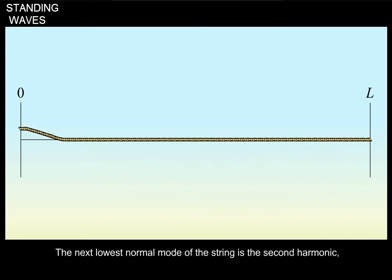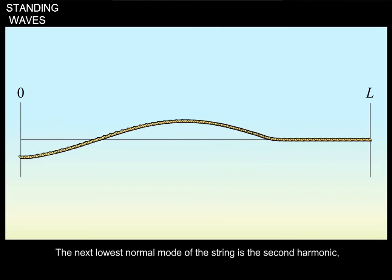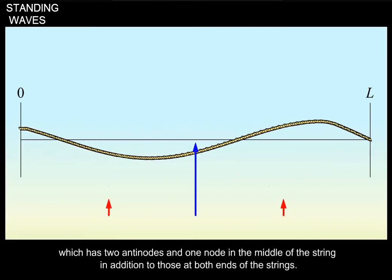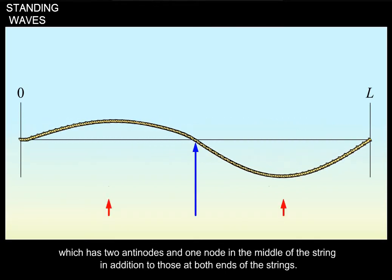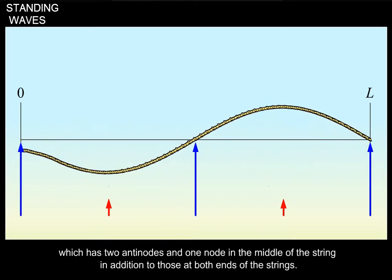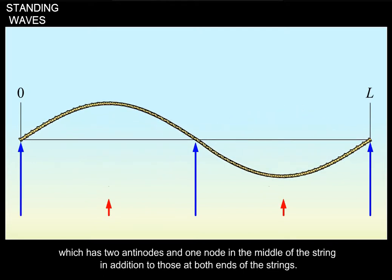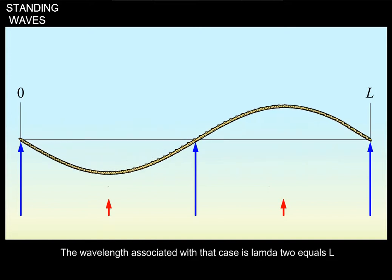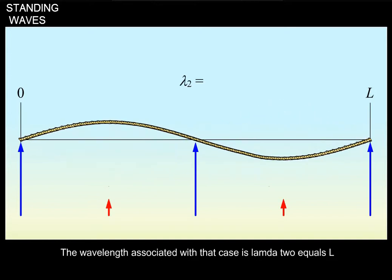The next lowest normal mode of the string is the second harmonic, which has two antinodes and one node in the middle of the string in addition to those at both ends of the strings. The wavelength associated with that case lambda 2 equals L.